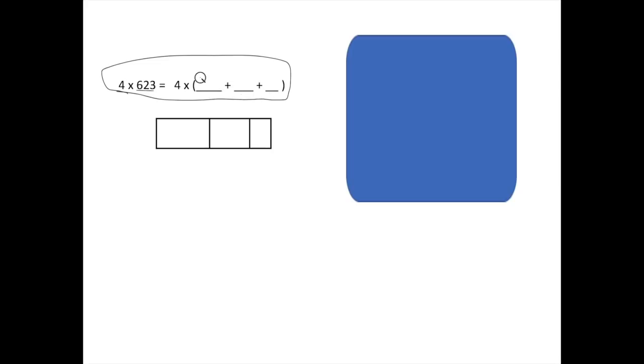All right. So now that you've expanded it, what you should have on your board is our six digit is in the hundreds place. So that's worth 600. Our two digit is in the tens place, so that's worth 20. And our three digit is in the ones place, so that's worth 3. So right now on your board, you should have 4 times 600 plus 20 plus 3.